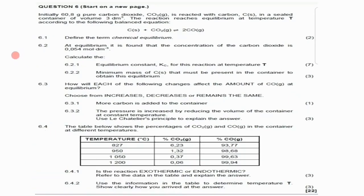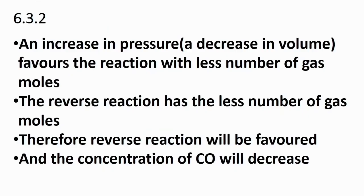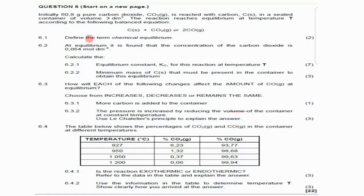For 6.3.2: the pressure is increased by reducing the volume at constant temperature — use Le Chatelier's principle to explain. Pressure and volume are inversely proportional, so an increase in pressure equals a decrease in volume. An increase in pressure favors the reaction with the fewer number of gas moles.